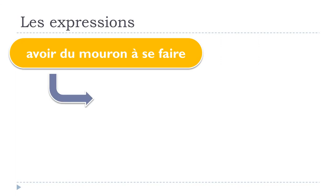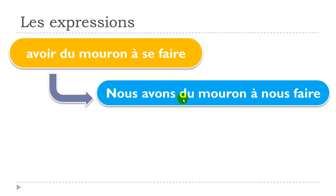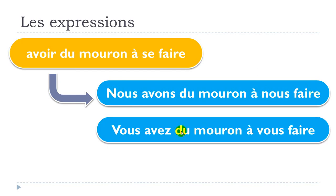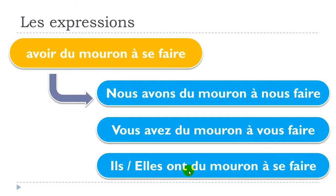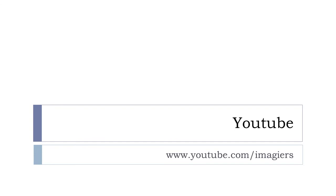Now for the plural forms: 'nous avons du mouron à nous faire', 'vous avez du mouron à vous faire', and 'ils/elles ont du mouron à se faire'. So remember: first person plural → nous, second person plural → vous, third person plural → se. Well, that's it! Have a great day — au revoir et à bientôt!